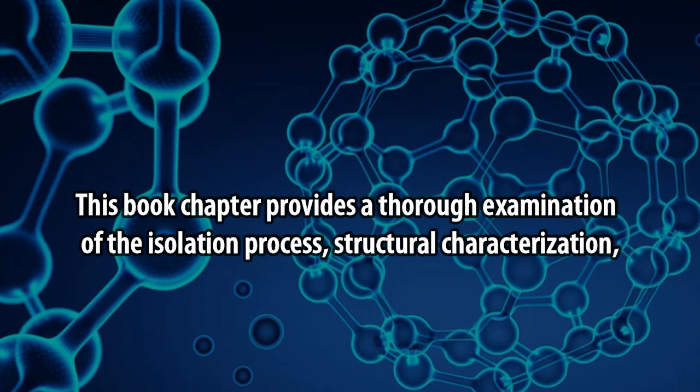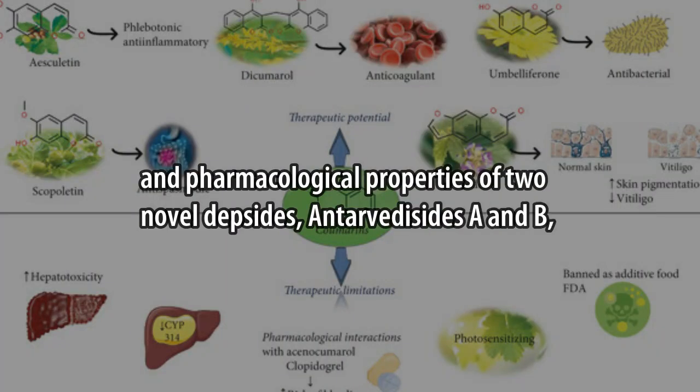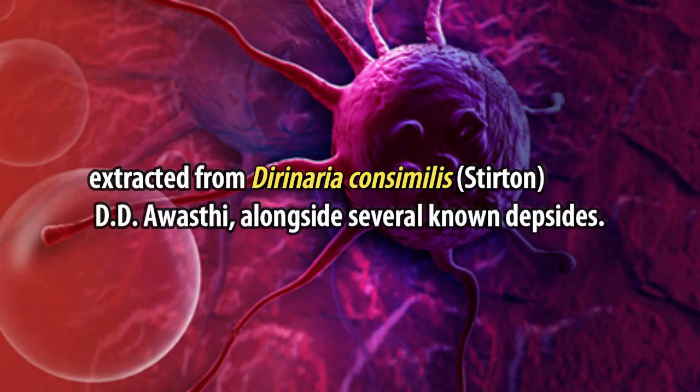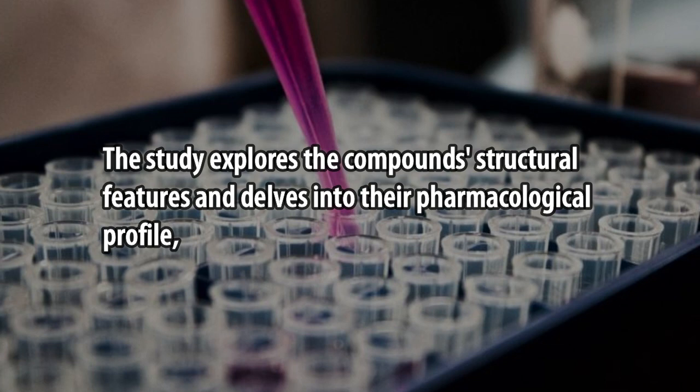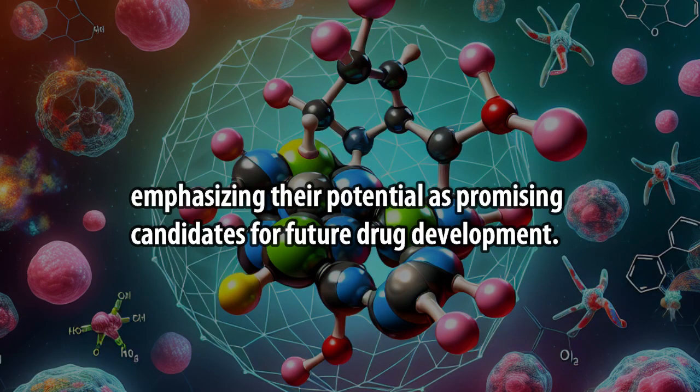thorough examination of the isolation process, structural characterization, and pharmacological properties of two novel depsides, Antavidacides A and B, extracted from Dirinaria Consimilis, Sturtin, D.D. Avasthi, alongside several known depsides. The study explores the compounds' structural features and delves into their pharmacological profile, emphasizing their potential as promising candidates for future drug development.